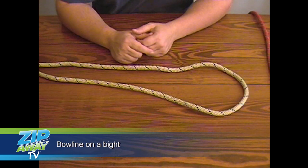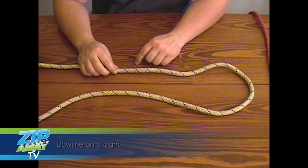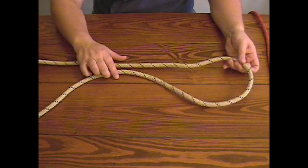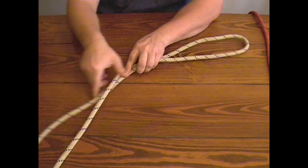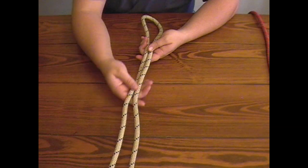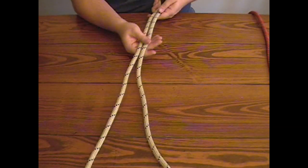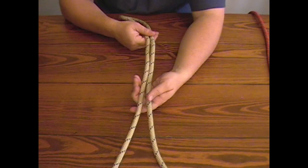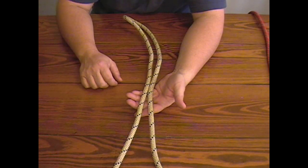The first knot we're going to look at is the bowline on the bite. Got an 11 millimeter static rope here and I want to go ahead and get a bite of rope. The easiest way for me to do this is take a bite and have my tail way out in front of me, and once I get the bite I'm going to hold it in my left palm with my left palm facing upward.